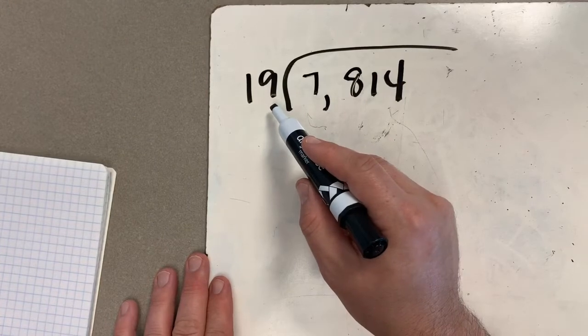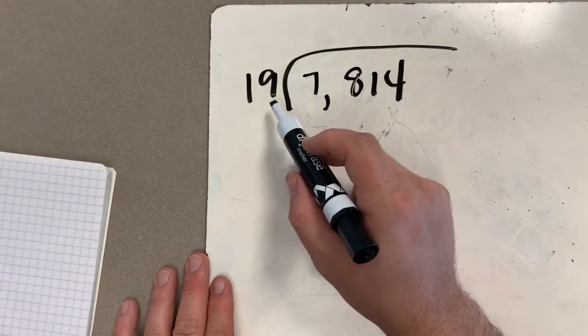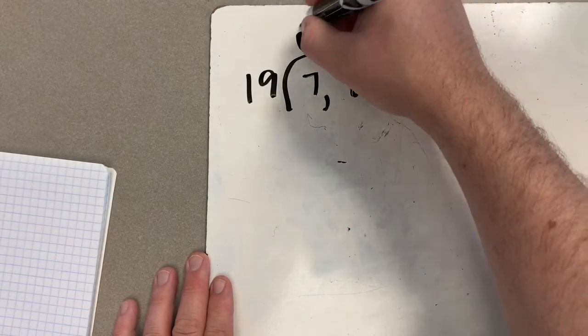Here's my number of equal size groups. So again, I can't take 19 out of 7, so there's always going to be a 0 holding place there.